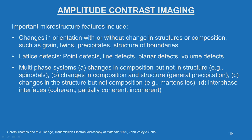Important microstructure features include changes in orientation with or without change in structure or composition, such as grains, twins, precipitates, and structure of boundaries. Lattice defects include point defects, line defects, planar defects, and volume defects. Multiphase systems can show changes in composition but not structure (e.g., spinodals), changes in composition and structure (general precipitation), or changes in structure but not composition (e.g., martensite). Interfaces can be coherent, partially coherent, or incoherent.